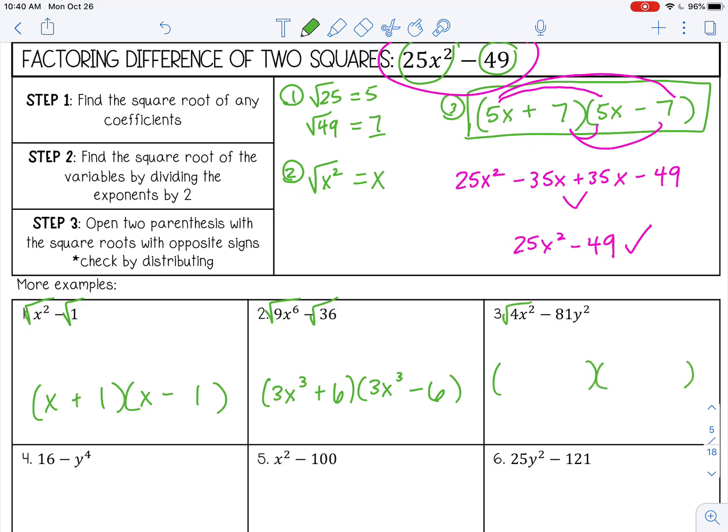All right, number 3. The square root of 4x squared would be the square root of 4 is 2. The square root of x squared is x. So 2x plus minus. The square root of 81 is 9. The square root of y squared is y.